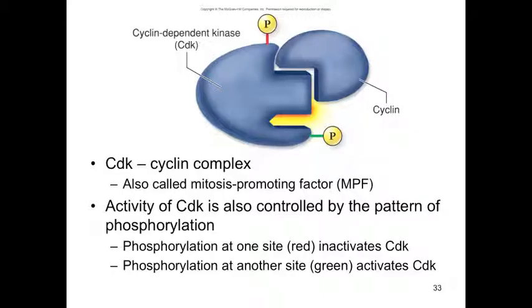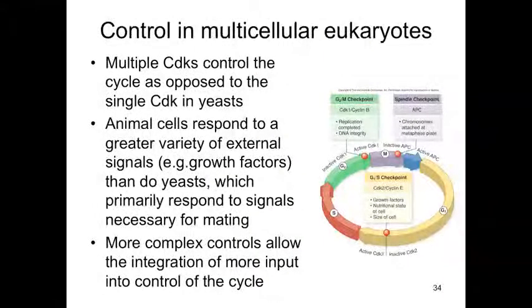Cancer is about loss of control in the cell cycle — cell division occurs much too frequently when things are not right. Most of the work on cell cycle controls has been done in prokaryotes, but some of the very same mechanisms exist in eukaryotes. There are multiple CDKs controlling the cycle in eukaryotes, as opposed to just one seen in the yeasts and bacteria that have been studied.